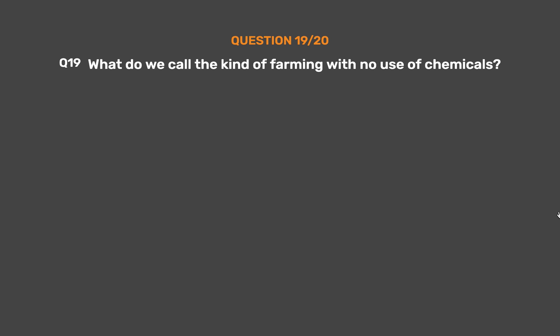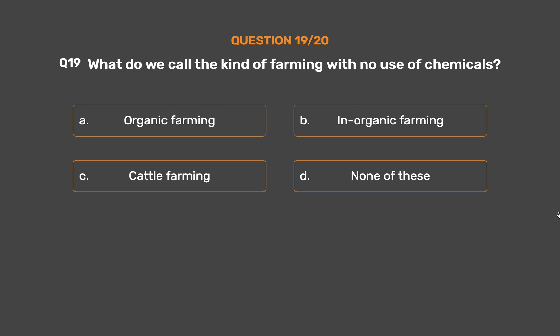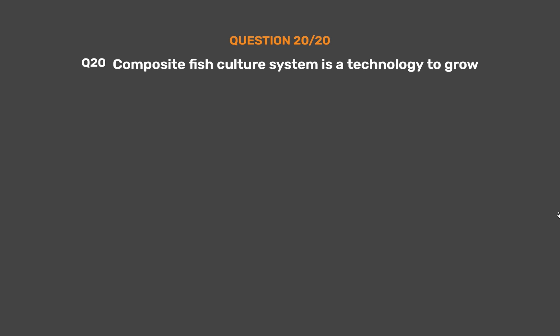Question No. 19. What do we call the kind of farming with no use of chemicals? Option A: Organic farming. Option B: Inorganic farming. Option C: Cattle farming. Option D: None of these. The correct answer is Option A: Organic farming. Organic farming is a method of crop and livestock production that involves choosing not to use pesticides, fertilizers, genetically modified organisms, antibiotics, and growth hormones.